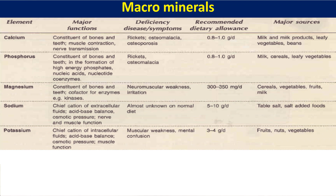Potassium is the chief cation of intracellular fluids. It is required for acid-base balance, osmotic pressure maintenance, and muscle functions. Deficiency causes muscle weakness. Its requirement is 3 to 4 grams per day and we get potassium from fruits, dry fruits, nuts, and vegetables.